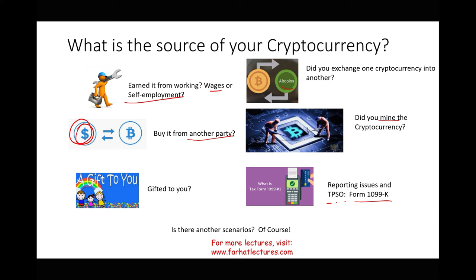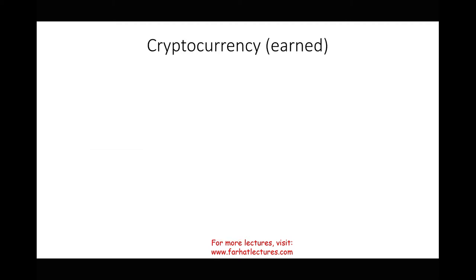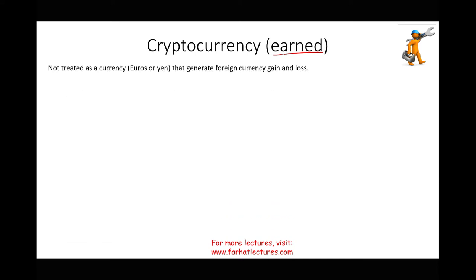Let's review. The IRS does not treat cryptocurrency as a currency that generates foreign currency gains and losses. How does the IRS look at cryptocurrency from a tax perspective? Easy: cryptocurrency is treated as property as far as the IRS is concerned. If you're a CPA and I tell you it's a property, you should know this is the key to everything.